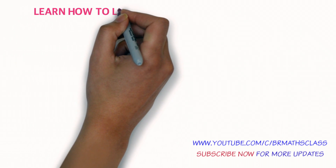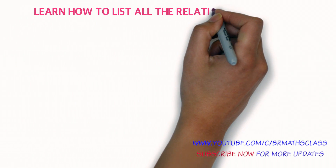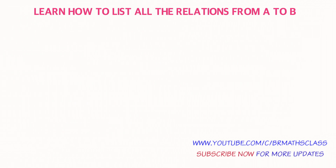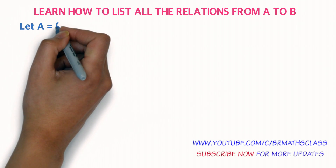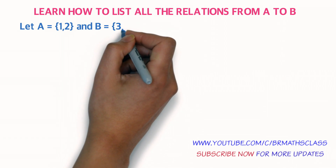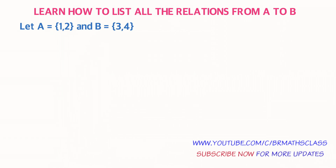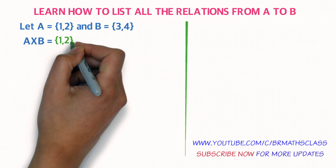Learn how to list all the relations from set A to set B. Consider two sets A and B. We need to calculate A cross B, and A cross B equals to the resulting set.